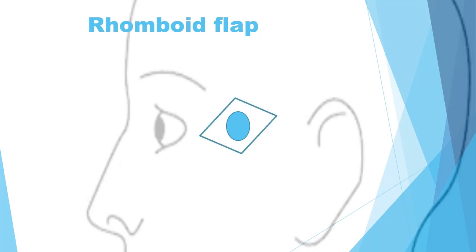The first thing you do is design a rhomboid around your defect. A rhomboid has four equal sides, but the degrees between the two opposing edges are 120 degrees, and the opposite corners are 60 degrees.